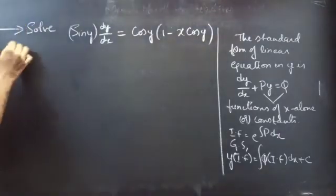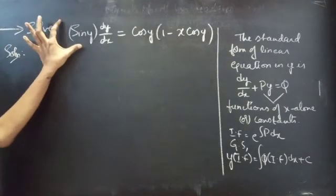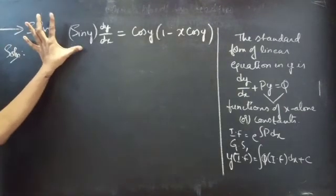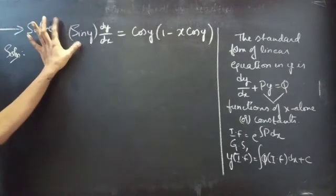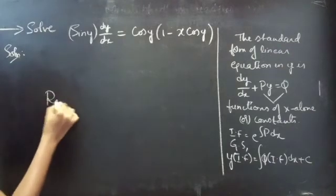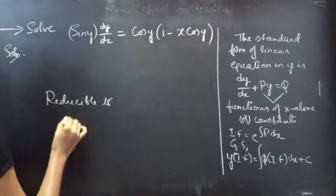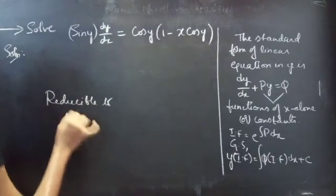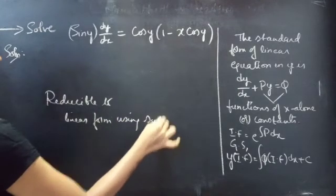Solution. By looking at the equation we can see that it is not in any of the direct forms which we have discussed earlier. So we will solve this by reducing it to linear form using some substitution. We are going to use the reducible-to-linear form using substitution method.